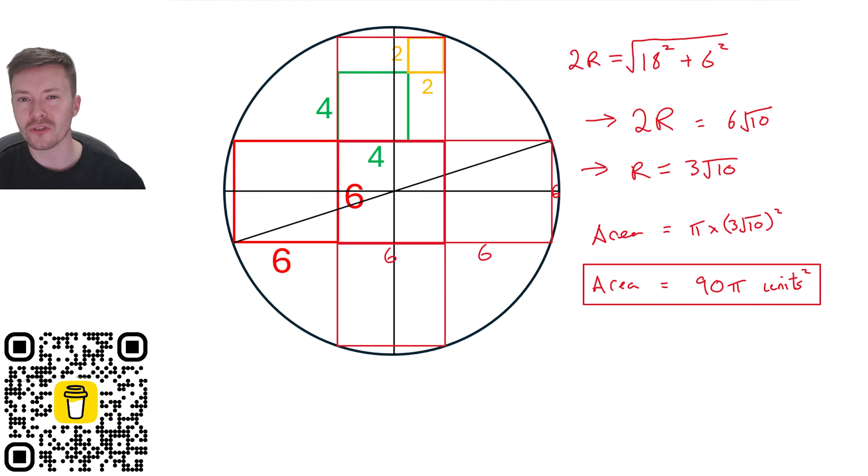What a strange answer, 90 Pi to the problem originally. Three squares going diagonally across a circle. I hope you enjoyed this problem, like I did, and I will catch you next week for another video.